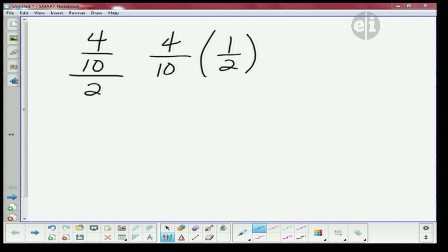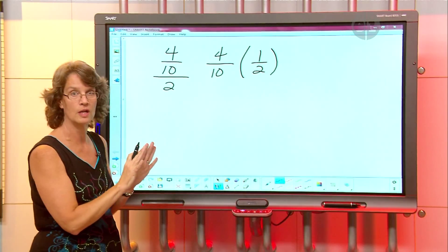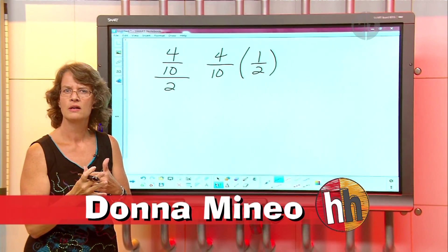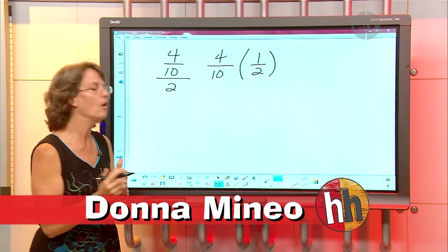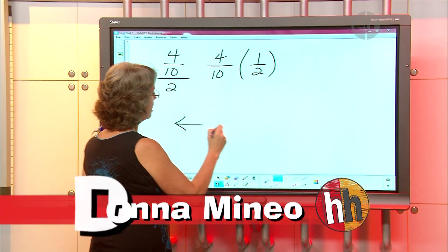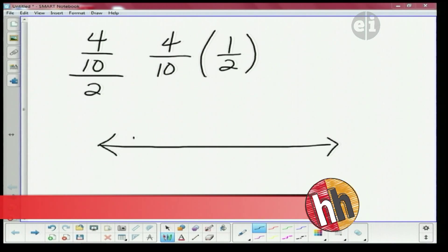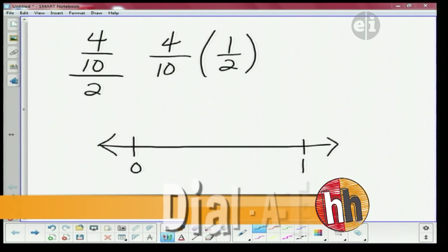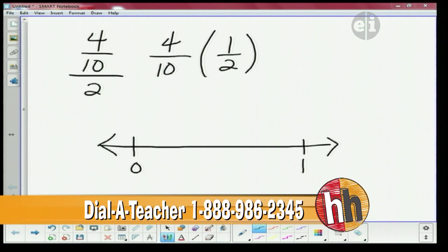All right so we have to show that these two things are equal. Now what does your number line look like on your paper? It goes from zero to one. Okay great. So I'm gonna draw a number line and I'm gonna put zero to one. Are there any marks in the middle? Yes. How many? Ten.